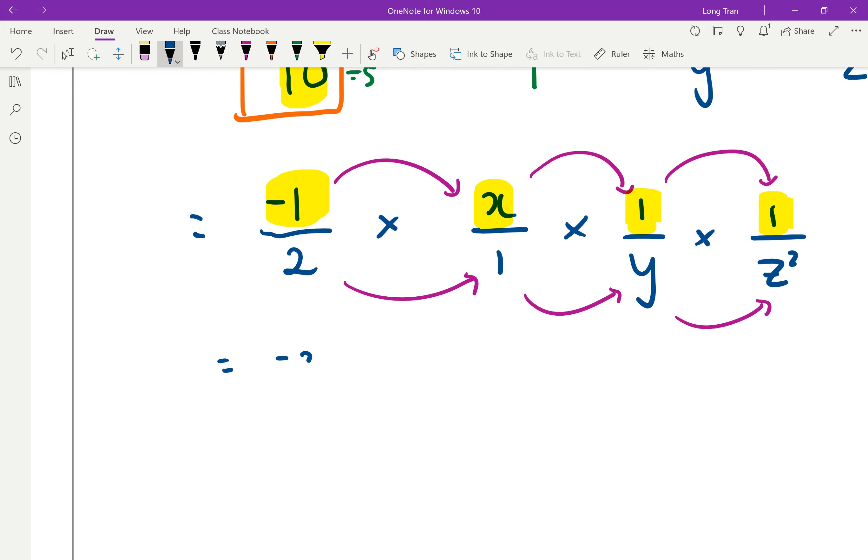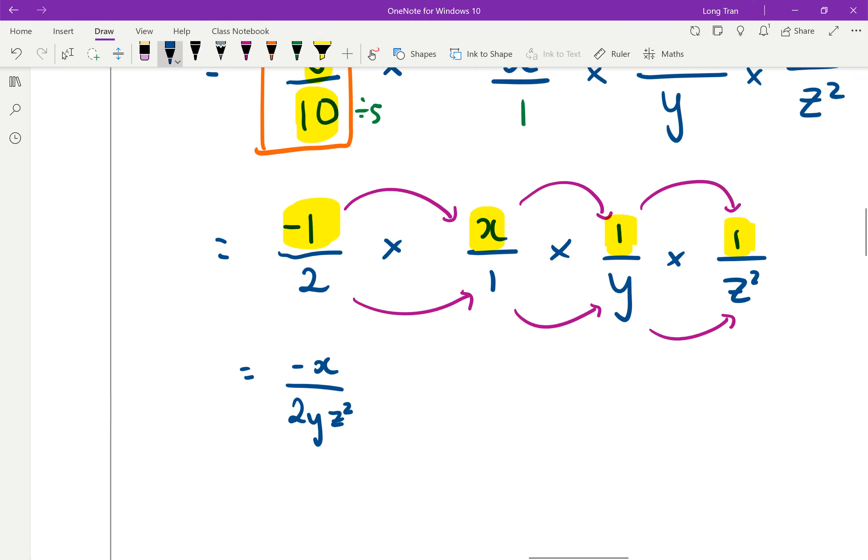So, negative x, because negative 1 times x is just negative x, and times 1, which is itself, and then 2 times 1 times y times z squared ends up being 2yz squared. There you go.